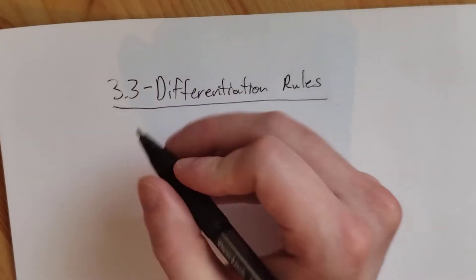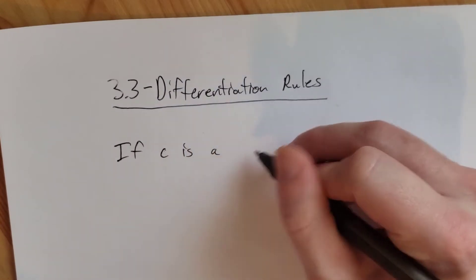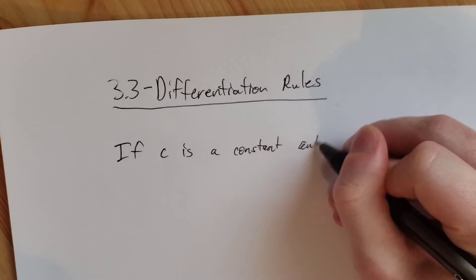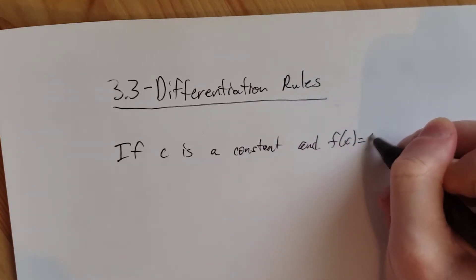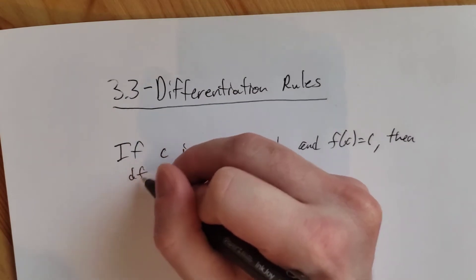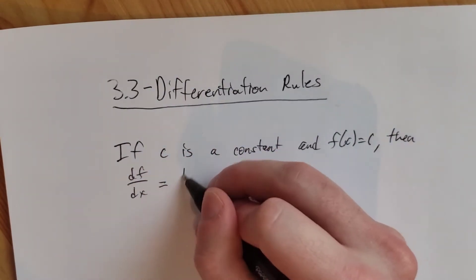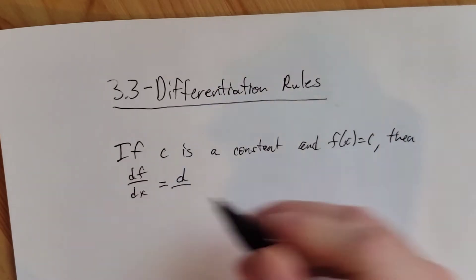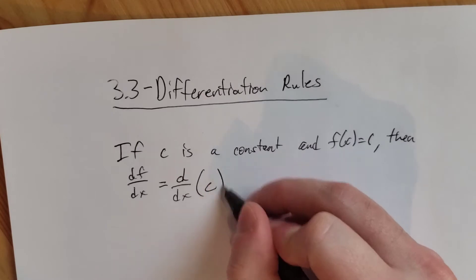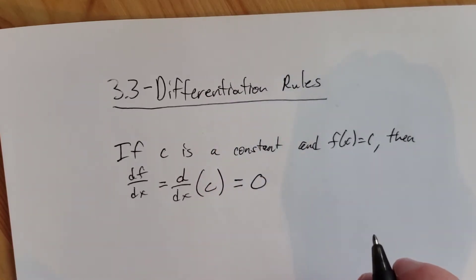Let's start with our first rule: if C is a constant and f of x is equal to C, then the derivative of f with respect to x — which we can also write as d/dx of the function C — that is zero.